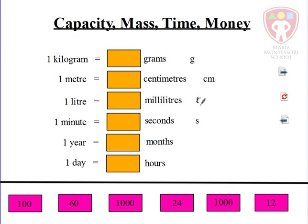So what I want us to do is let's have a look at this interactive activity here. What we're going to do is drag the number in that matches and makes the statement true. So for example, one kilogram equals how many grams? This is Interactive Activity 4.4 — the teacher will get it up and open it.